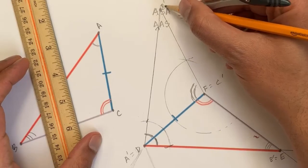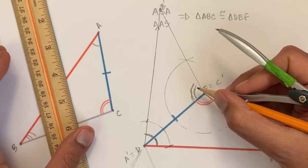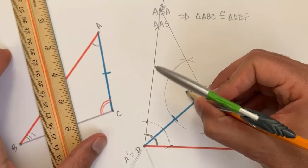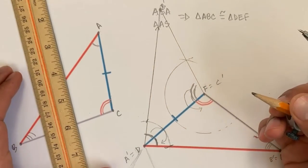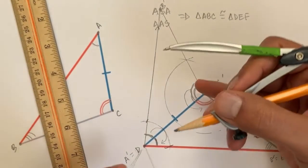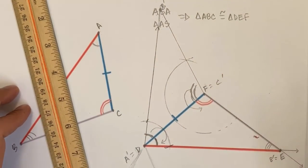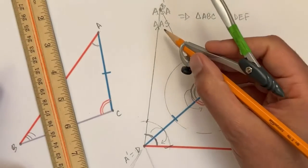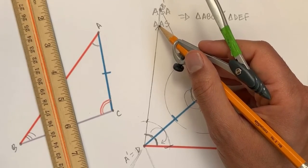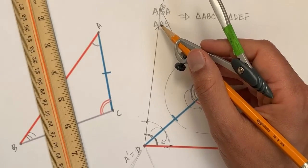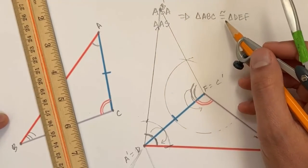And there you have it. If you have two angles, you know the third. So if you have two angles and a side with the same measure or length, the triangles are guaranteed to be congruent.